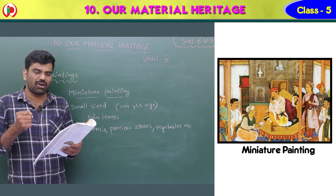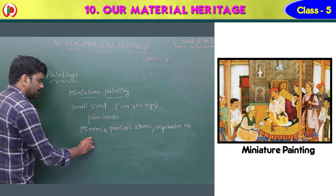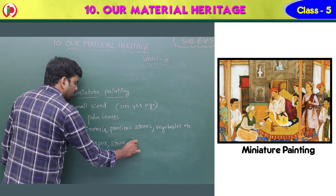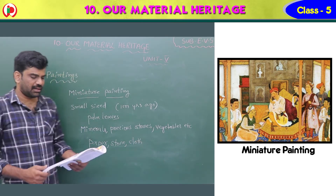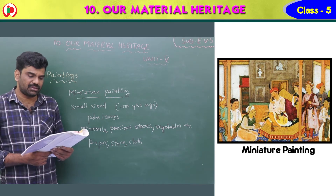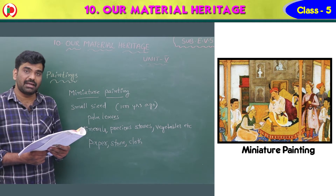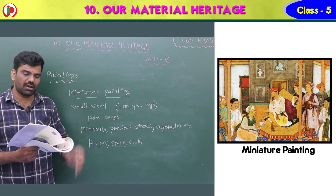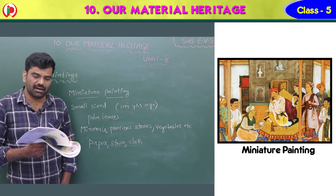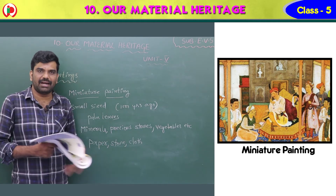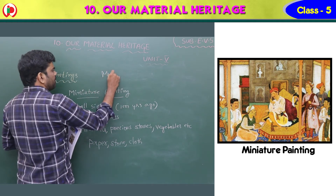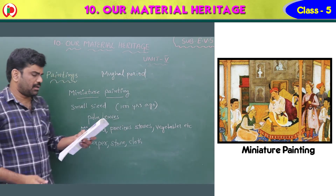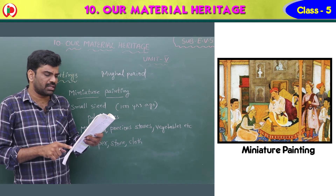Today, miniature paintings are made on paper, stone, and cloth. Once upon a time they were made on palm leaves; today they are made on paper, stone, and cloth. These were very popular in the Mughal period.